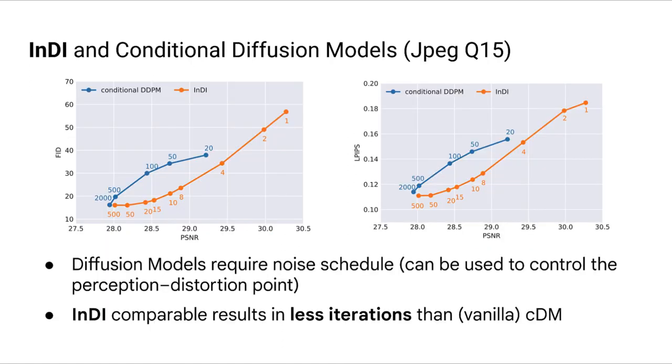Here you can see a comparison between INDI and a vanilla conditional diffusion model for JPEG compression artifact removal. Both models have very similar architectures, so they have approximately the same capacity in this experiment. INDI manages to get into a similar quality point in much fewer iterations than vanilla diffusion since we operate directly on the input image.